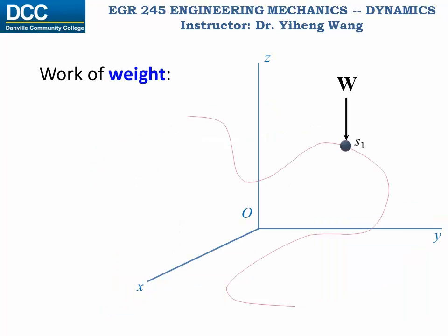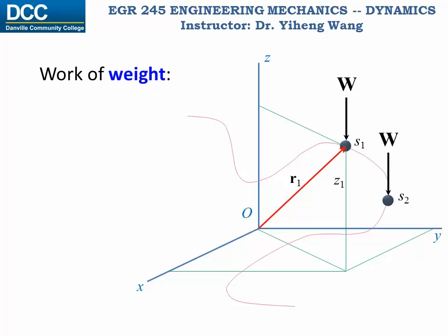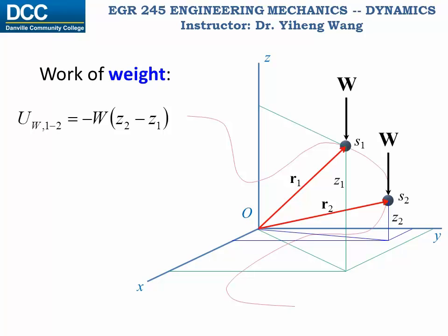For a particle undergoing curvilinear motion in an established rectangular coordinate system, initially it is at state one with a position of r1 and a vertical coordinate of z1. After some time it has moved to a new position r2 with a new vertical coordinate of z2. During this process, the work done by the gravitational force — or weight force — acting on this particle equals negative w multiplied by the change in its vertical location, which is z2 minus z1, or simply negative w delta z.